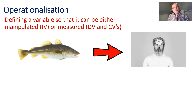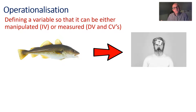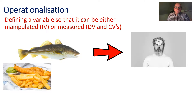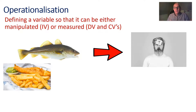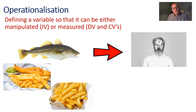For instance, let's say I'm interested in the idea that eating fish will influence how intelligent you are. I need to operationalize my independent variable - eating fish - in a way I can manipulate and measure. So I'll compare people who eat fish and chips to those who just eat chips. Fish in one group, no fish in the other. That's how I've operationalized my independent variable, making it specific: eating fish and chips versus just eating chips, which creates my two groups.